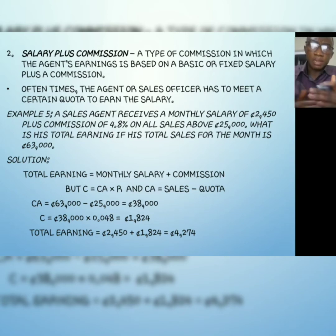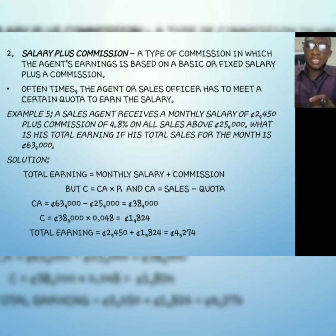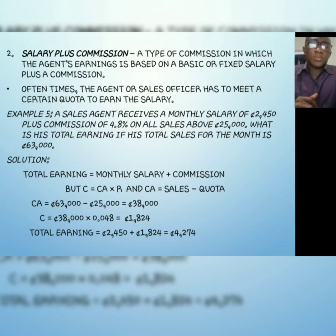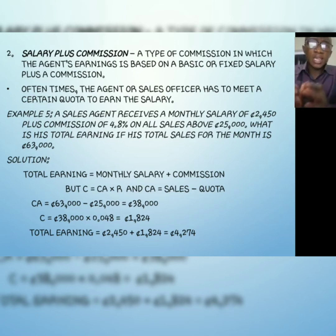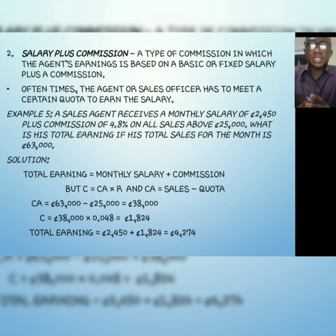The next type is salary plus commission. With this type, the agent or salesperson's earnings comprise one fixed salary plus a commission. The basic salary is fixed — whether you sell or you don't sell, you'll be paid. For example, the company gives you 100 cedis just for being a staff member. Then if you sell, you get commission on that. Your total earnings will be the basic salary plus any commission earned. Often the agent has to meet a certain quota to earn the salary.